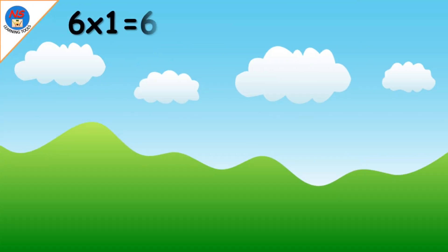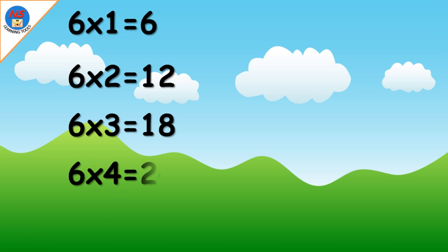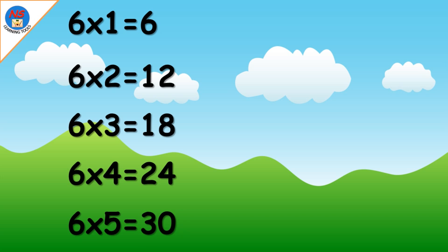Six ones are six. Six twos are twelve. Six threes are twenty-four. Six fours are twenty-four. Six fives are thirty. Six sixes are thirty-six.